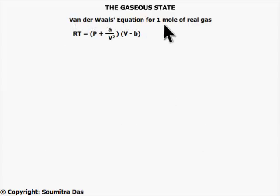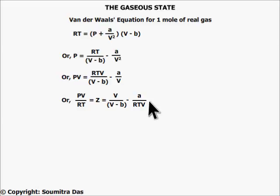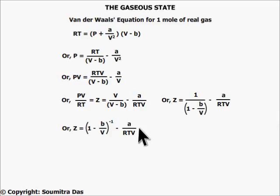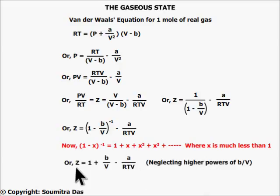From the van der Waals equation for one mole of real gas, P = RT/(V−B) − A/V². So PV = RTV/(V−B) − A/V, which gives Z = PV/RT = V/(V−B) − A/(RTV). This simplifies to Z = 1/(1 − B/V) − A/(RTV), or Z = (1 − B/V)⁻¹ − A/(RTV). Expanding using the approximation that (1−x)⁻¹ ≈ 1 + x when x is much less than one, and neglecting higher powers, we get Z = 1 + B/V − A/(RTV).